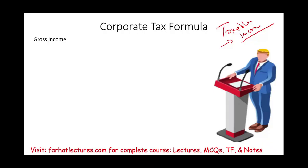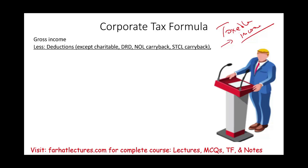First, we start with gross income, which we defined in an earlier session — basically it includes all income unless it's excluded. Then we deduct the deductions, which are the expenses. When we deduct these deductions, we do not deduct charitable contribution, the dividend received deduction, any net operating loss carryback, or any short-term capital loss carryback. Gross income less the operating deductions gives us taxable income for the charitable contribution limitation.